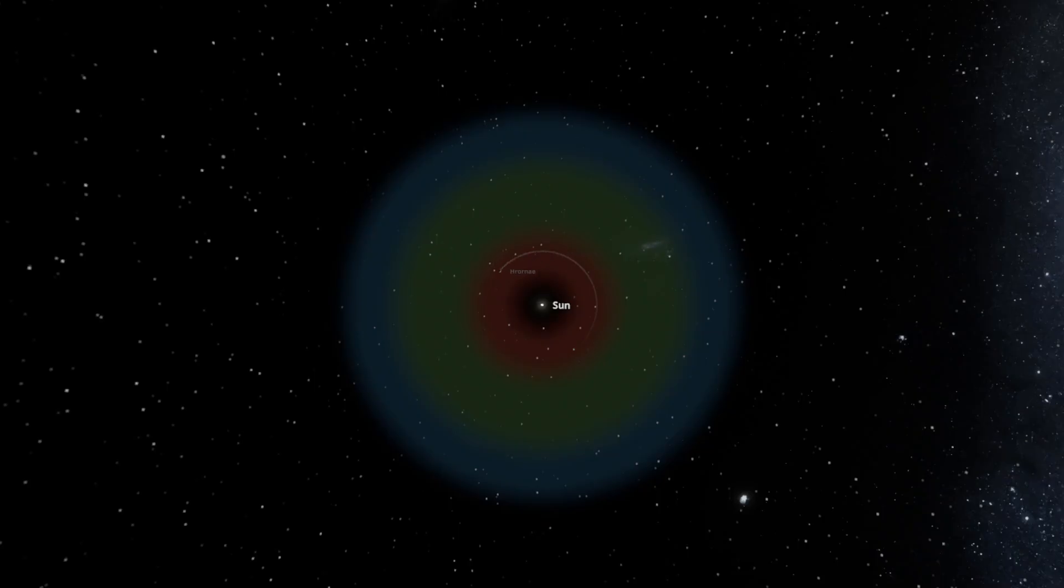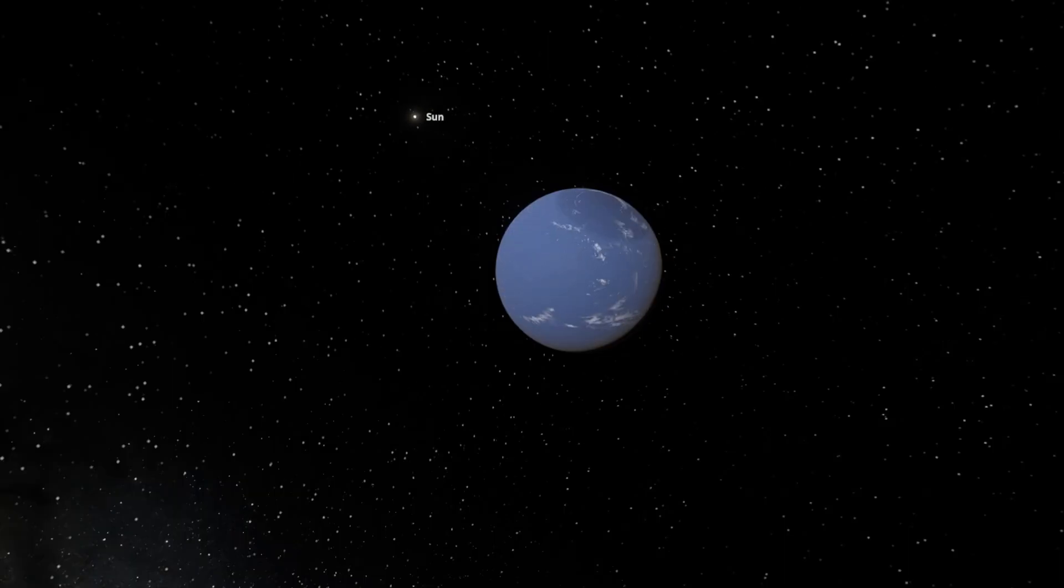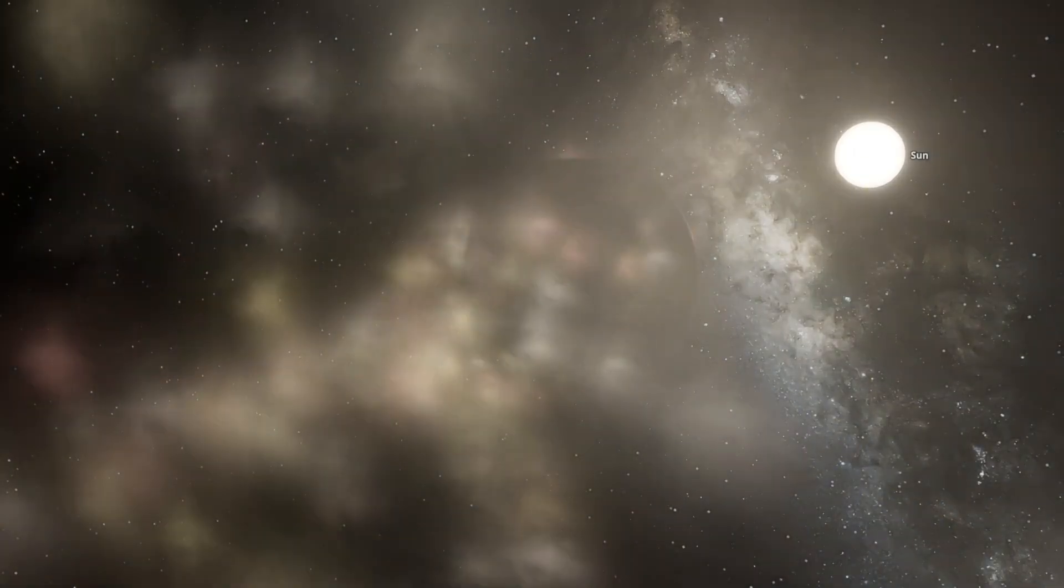The first, and arguably most important, is that the object needs to exist within the habitable zone of its parent star. Liquid water needs to be present on its surface. Too far away, water freezes. Too close, liquid water evaporates.